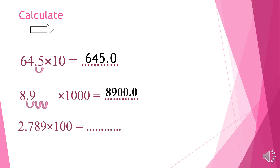Another example: 2.789 times 100. I will move the point two steps to the right side. It will be 278.9. Excellent.